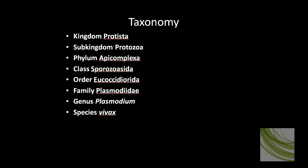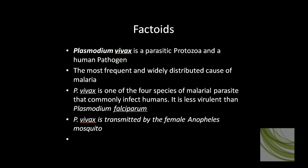This is a discussion of the slide for the malarial parasite Plasmodium vivax. Here is the taxonomy of Plasmodium. Plasmodium is parasitic and a human pathogen. It causes malaria by infecting red blood cells or erythrocytes. It is the most frequent and widely distributed cause of malaria. It's not as virulent as Plasmodium falciparum, which is by far more lethal.